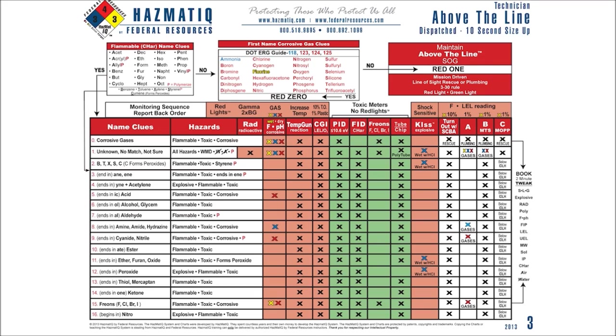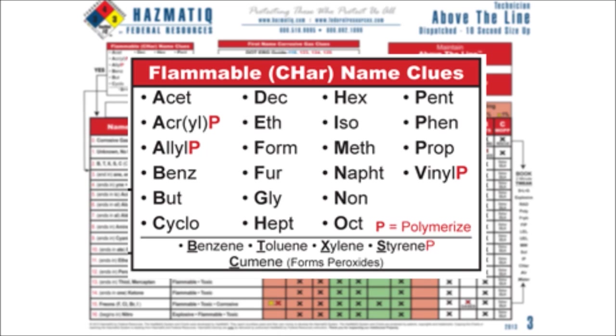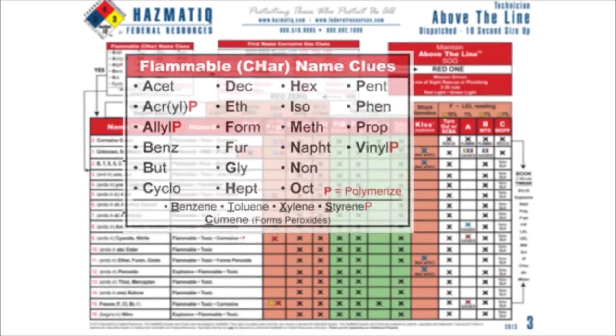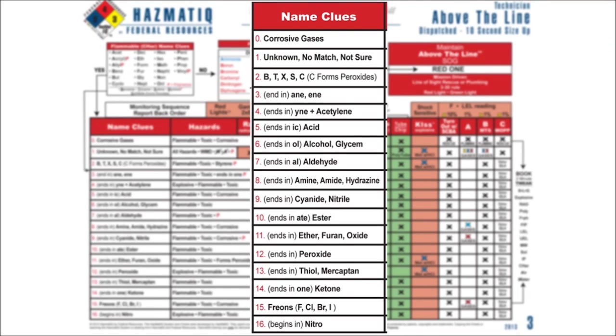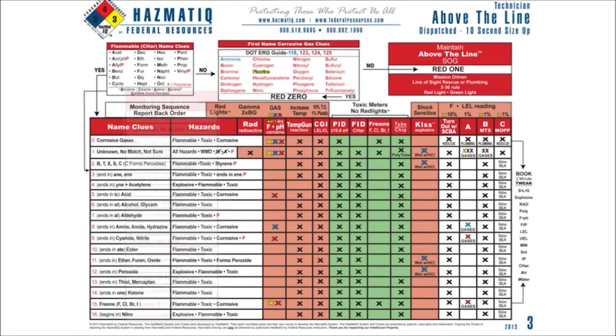Then we go to chart number three. You see the last bullet — above the line says continue on chart three. Now we're going to sharpen the response by going to the ether family. We go to the flammable box at the top in alphabetical order, go down to the E's, and we see that three-letter word: F. So yes, it's there. We follow the arrow down that says yes, and we match the word ether. We tell our crew we're running on audible. The above the line becomes red 11. The word ether, furon, and oxide all mean the same thing: red 11. Some crews have turnout, some have level A, level B, level C, MOP, or multi-threat suits.